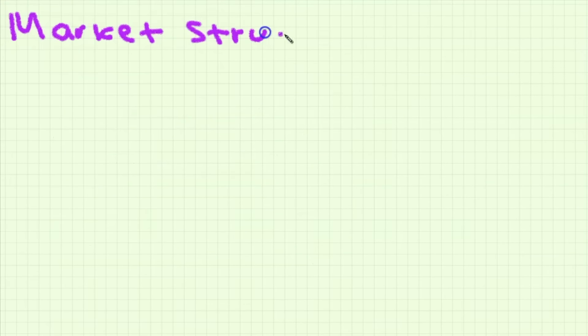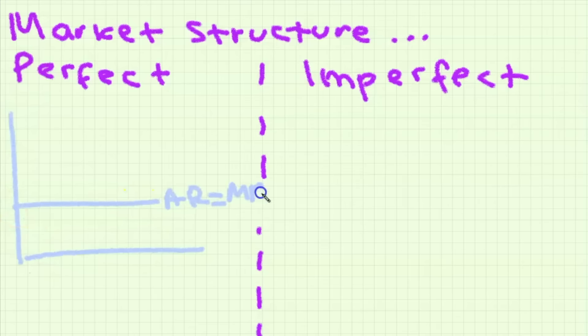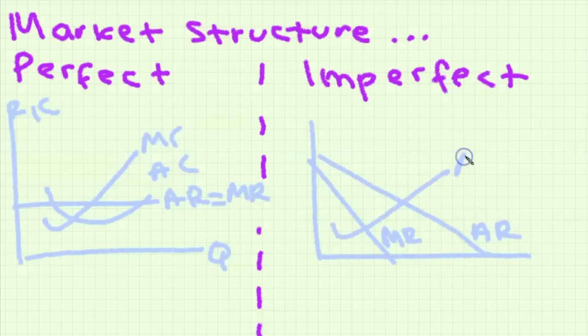For the revenue curves however they're not the same, they depend on the market structure. For perfect competition we have a perfectly elastic demand curve, AR curve and MR curve and price curve, they're all the same thing simply because the firm is a price taker not a price maker. If we draw the AC curve underneath the AR curve then that means in this case that the firm is making a profit.